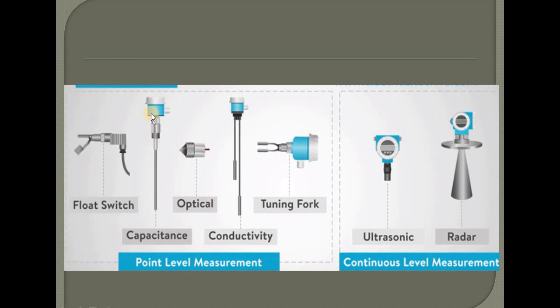Types used for point level measurement include: float switch, capacitance, optical, conductivity, and tuning fork. Continuous level measurement uses ultrasonic and radar sensors. Ultrasonic and radar are in the same category.